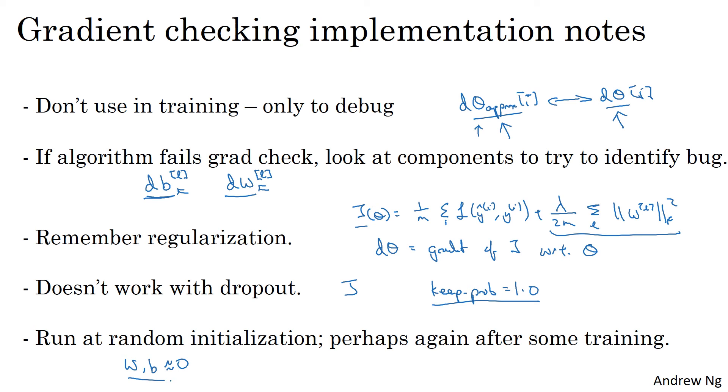So one thing you could do, I don't do this very often, but one thing you could do is run grad check at random initialization and then train the network for a while, so w and b have some time to wander away from zero from your small random initial values, and then run grad check again after you've trained for some number of iterations.